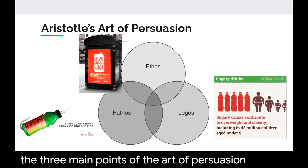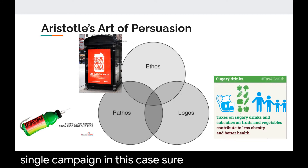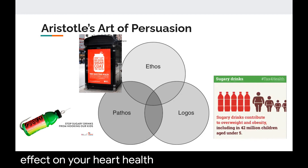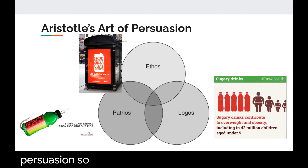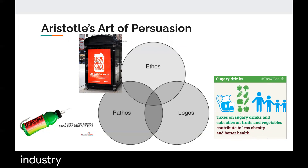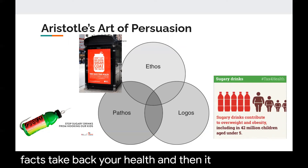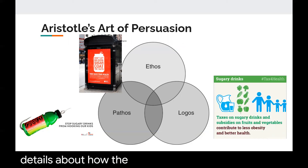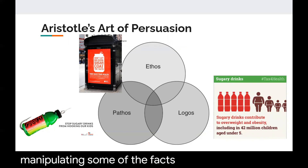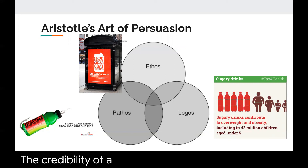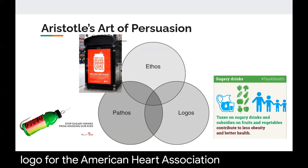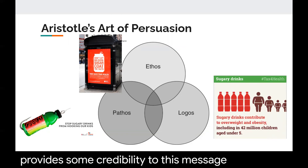If we're looking at a single campaign — in this case, sugary drinks and their effect on your heart health — the American Heart Association and others have done many types of campaigns that use one of these three arts of persuasion. In terms of ethos, they're actually attacking the credibility of big soda by saying, 'Don't let big soda sugarcoat the facts, take back your health.' And we're using a very well-known brand logo for the American Heart Association, which provides credibility to this message given their expertise in the field.